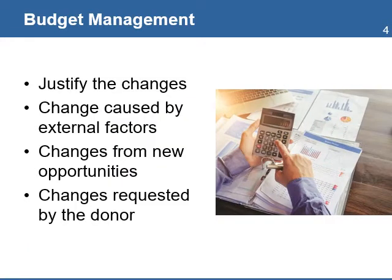All changes to the budget need to be justified. This might come from changes in the external environment, such as natural disasters, social unrest, or economic conditions. The organization may request a change based on new information and opportunities to increase the impact of the project, and even the donor might also request a change in the budget.